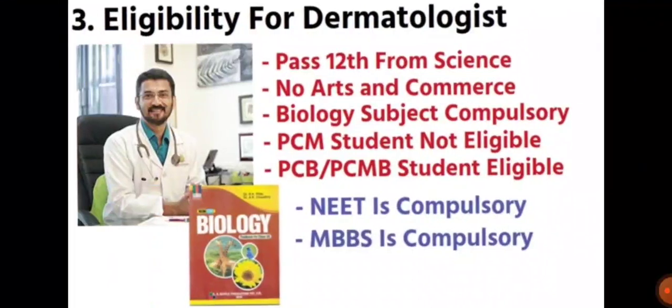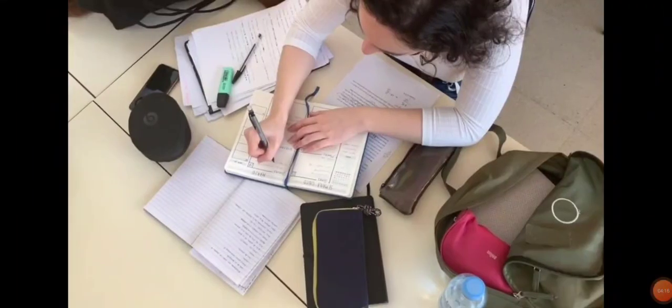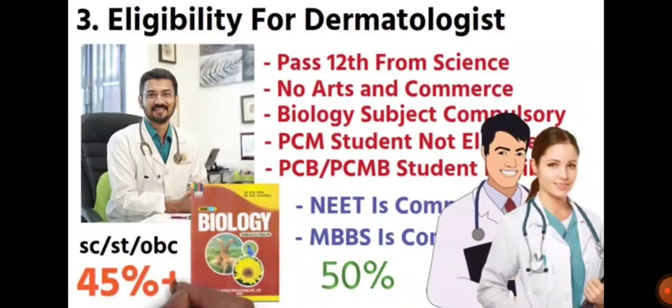For eligibility as a dermatologist, you need to pass 12th in the science group — arts or commerce are not allowed. Biology is a compulsory subject. PCM students are not eligible; PCB or PCMB students are eligible. NEET and MBBS are compulsory, so you need to prepare and crack the entrance exam. SC/ST candidates will have a percentage of seats allotted with reduced cutoff.